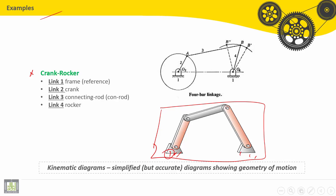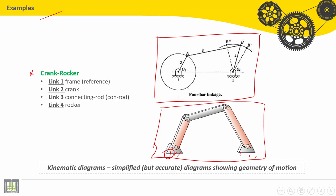Here we have to draw the kinematic diagram. It is very simple and very easy to be drawn. Each link here is a bar link, so it can be drawn as a line. So link number one, two, three, and four.